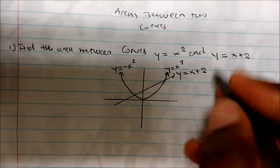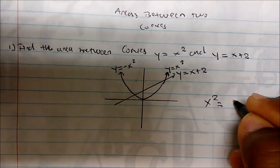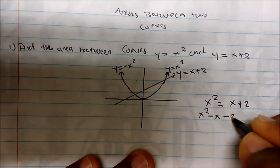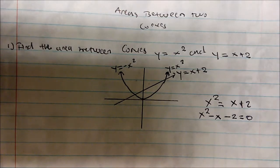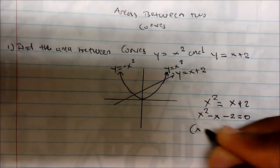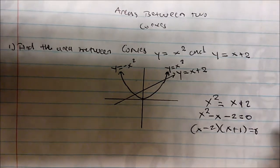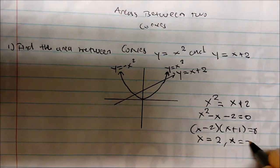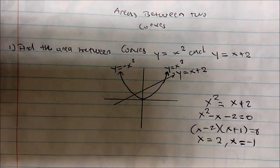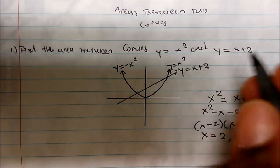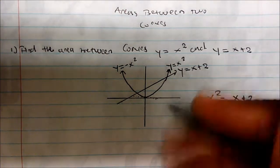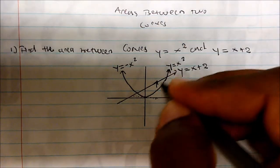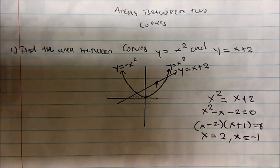Since our limits are not given, we set the two functions equal to each other: x² = x + 2, which gives x² − x − 2 = 0. Factoring this polynomial gives (x − 2)(x + 1) = 0, so the limits of integration are x = 2 and x = −1. To find which curve is on top, we can look at the picture — walking along the x-axis, the upper curve is y = x + 2 and the lower curve is y = x².